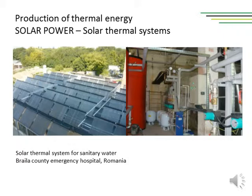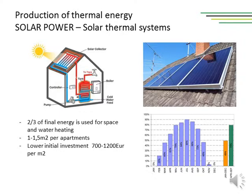Now you will see how solar energy can be used for production of heat. As opposed to photovoltaics, which transform sunlight into electricity, solar thermal systems collect direct solar radiation to be used as heat for space and water heating. Solar thermal applications can also be used for direct food drying, evaporation, and cooling. On the picture is Braila County Emergency Hospital in Romania. On the left side you can see solar collectors with vacuum tubes, and on the right, pumps, valves, and a hot water reservoir.